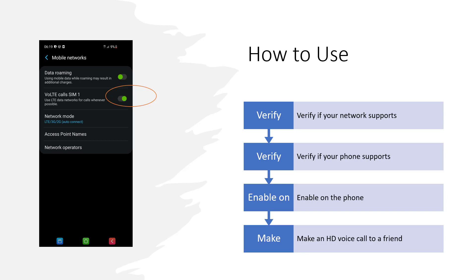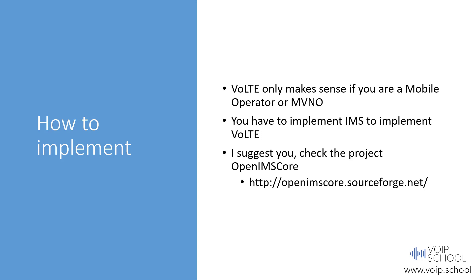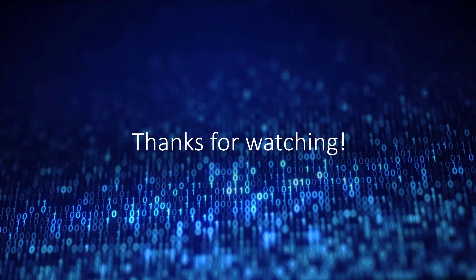To use Voice over LTE, verify that your mobile operator supports it and that your phone supports it, then enable it on your device — check your specific model for instructions. Both parties need VoLTE enabled to make an HD voice call. To implement Voice over LTE, you need to implement an IP Multimedia Subsystem. The OpenIMSCore project from Fraunhofer in Germany has made significant effort to make IMS simpler and easier to implement, even for smaller companies. This ends our lecture about Voice over LTE — thanks for watching, see you in the next lecture.